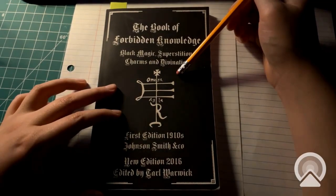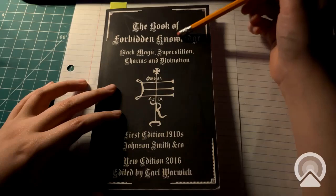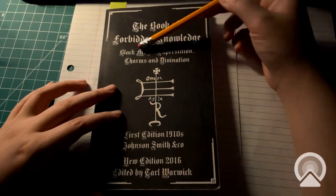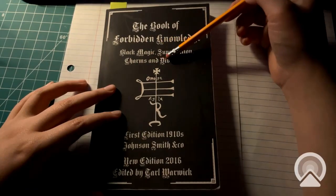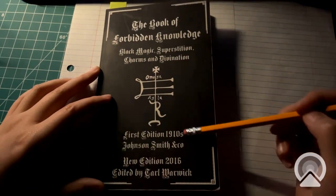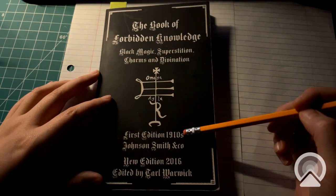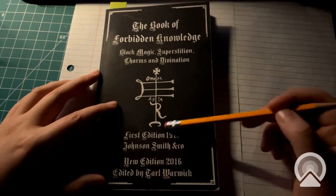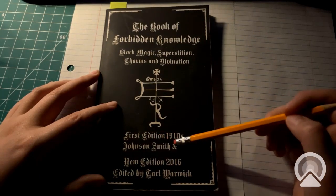So, this book is called The Book of Forbidden Knowledge, Black Magic, Superstition, Charms, and Divination. Apparently the first edition of this book was printed in the 1910s by Johnson, Smith, and Co.